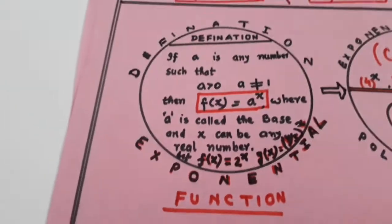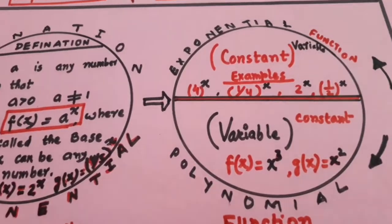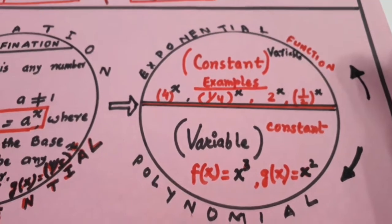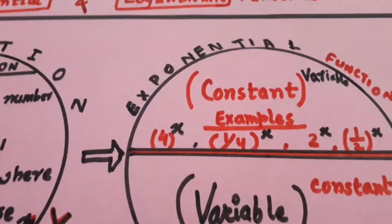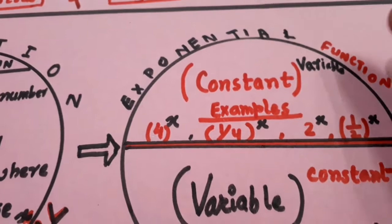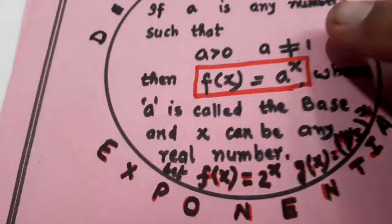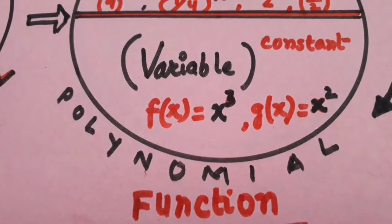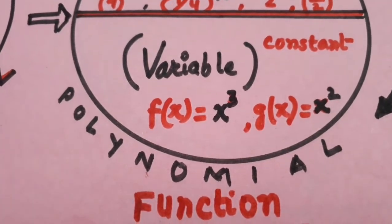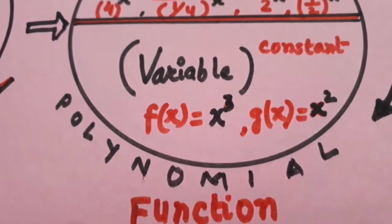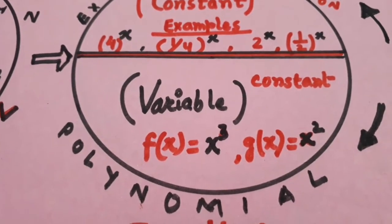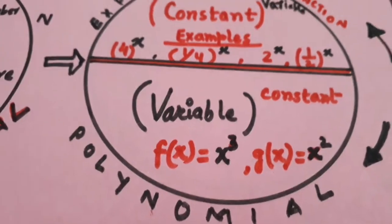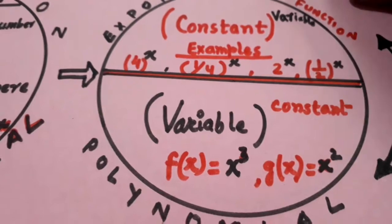So, this is exponential function. Now, what is the difference between exponential function and polynomial? Look here, exponential is constant key power variable. Constant to the power variable. Or polynomial is variable key power constant, x key power 3 or x key power 2. So basic difference is what: constant key power variable, variable key power constant, polynomial functions or exponential function.